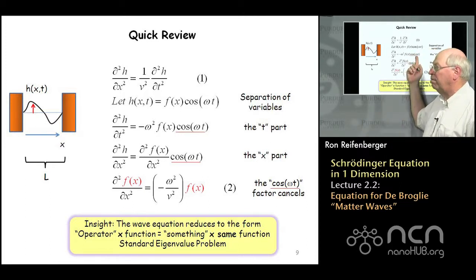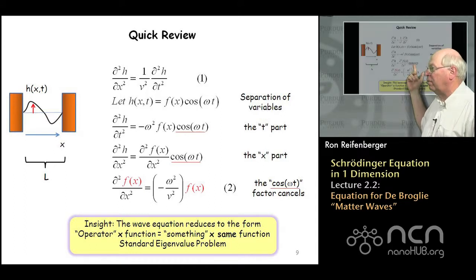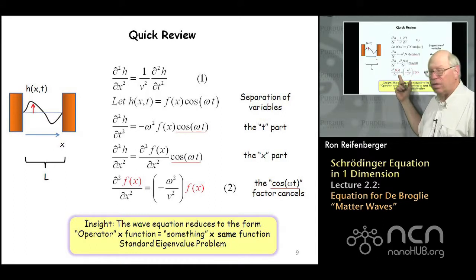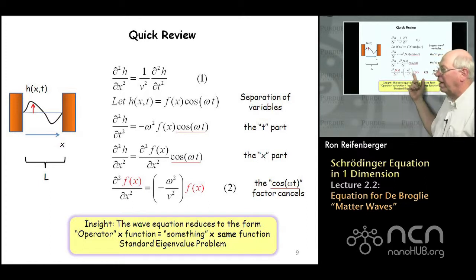You find that the time-dependent part of the solution drops out because it shows up at both the left and the right-hand side of the equation, and you're then left with an equation that describes just the spatial disturbance F of x. And this equation has a special form. It's referred to as an eigenvalue problem.